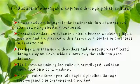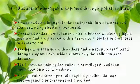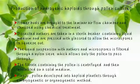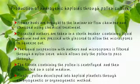Flower buds are brought to the laminar airflow chamber and sterilized using chemical treatment. Dissected anthers are placed in a sterile container with liquid medium and pressed with a glass rod to allow microspores to squeeze out. The liquid suspension is filtered through a nylon sieve, allowing only pollen to pass through. The filtrate is centrifuged and inoculated on solid medium, where pollen develops into haploid plants through embryogenic or organogenic methods.